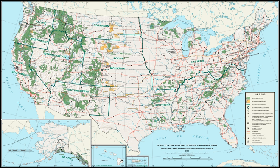Whereas a typical national forest would be about 1,000,000 acres, the average grassland size is 191,914 acres. The largest national grassland, the Little Missouri National Grassland in North Dakota, covers 1,028,784 acres, which is approximately the median size of a national forest.